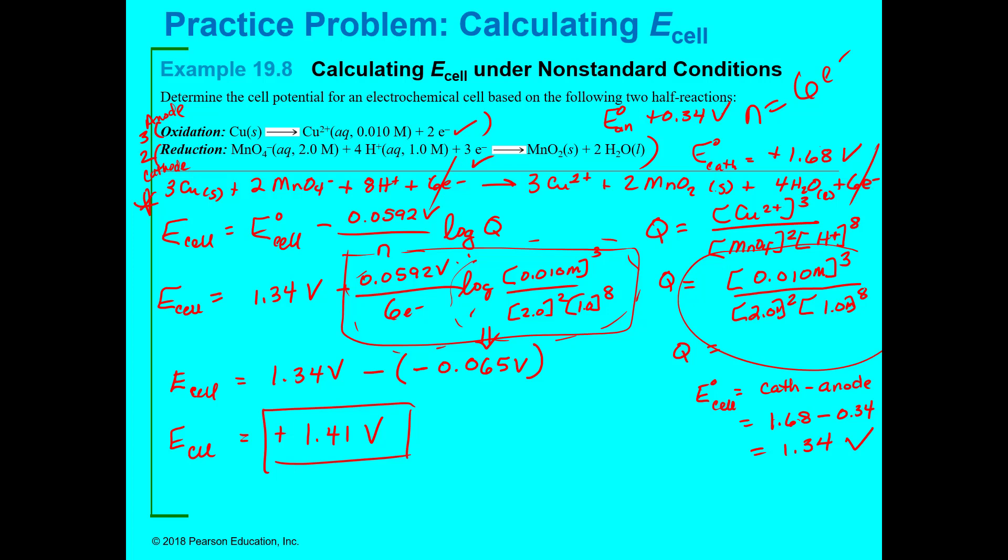That's the Nernst equation. You have to know how many moles of electrons, in this case it was six. You have to know, you'll be given the concentrations because that's the whole reason you're having to use Nernst. Which you plug in and get your Q. You take the log of your Q, multiply that by the 0.0592 divided by your electrons, and then you subtract all of that from the E⁰ of the cell, what it would be under standard conditions. So it went from 1.34 to 1.41 by changing those concentrations.